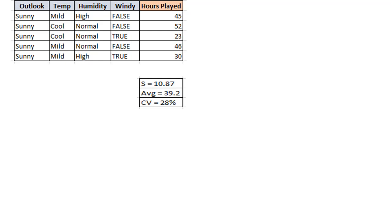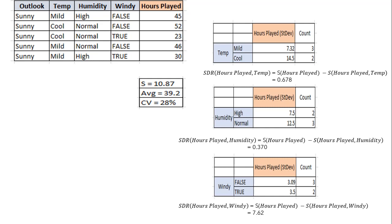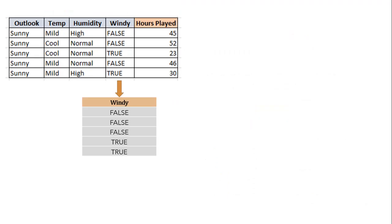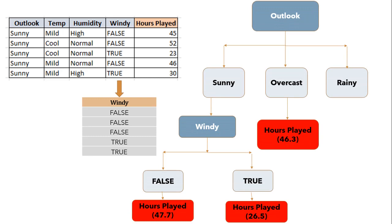Again we calculate standard deviation for values of each column as shown on the screen. Then we find the standard deviation reduction and select the column with the highest value. Here, windy has the maximum standard deviation reduction. Windy has two values: true and false. We stop further branching and assign the average of each branch to the related leaf node, as the number of data points for both branches (false and true) is equal to or less than 3, and the coefficient of variation for these branches will always be less than the threshold.